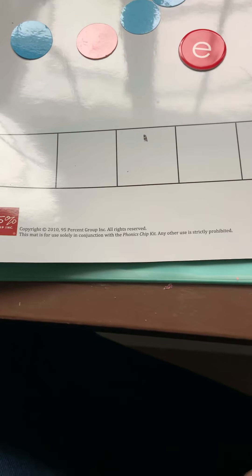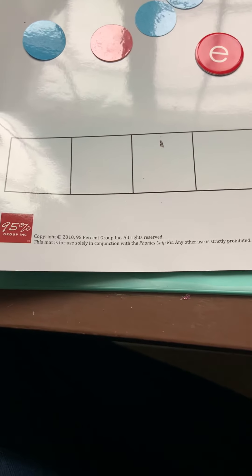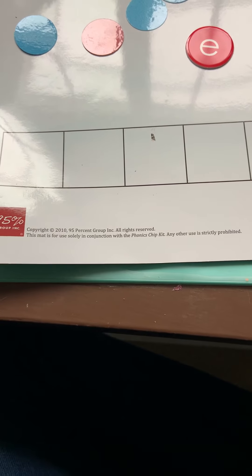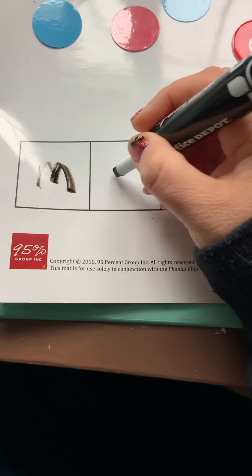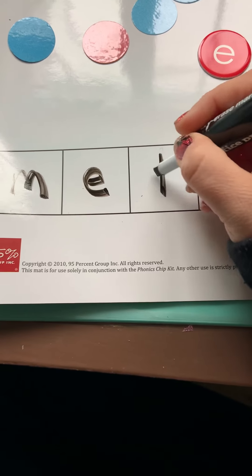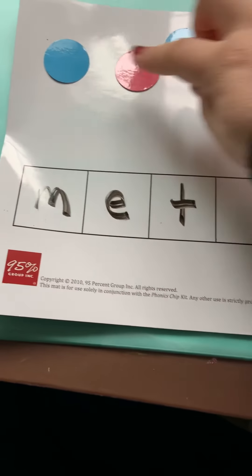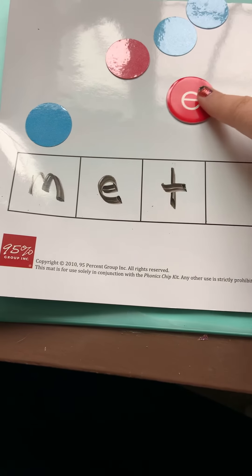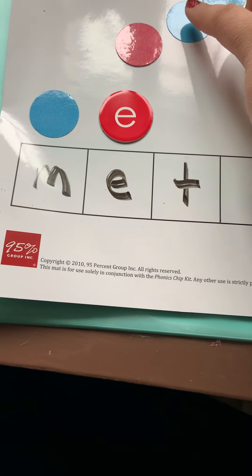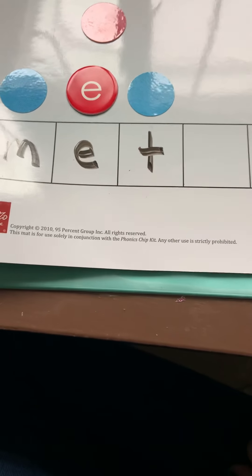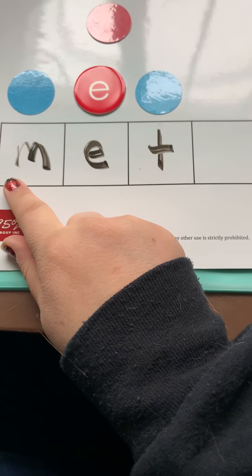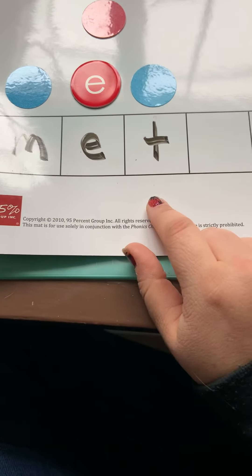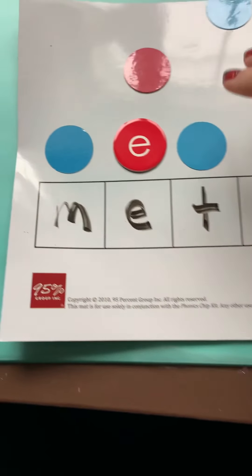This time we're going to start by writing the word. The word is spelled M-E-T. I'm going to write the word: the letter M goes in the first box, the letter E in the second box, and the letter T in the third box. Now I'm going to move the chips: a blue chip for M, the red E chip for E, and the blue chip for T. It follows our pattern — blue, red, blue — so let me sound it out: met. Met. Nice.